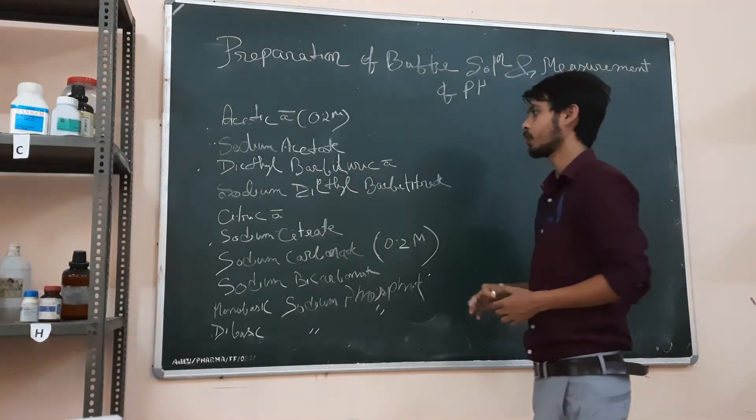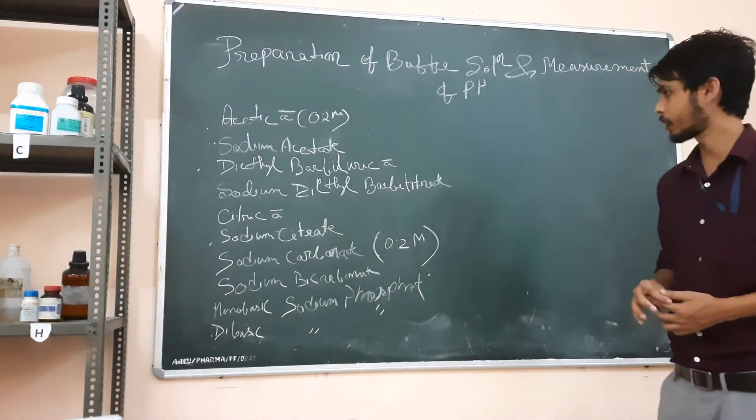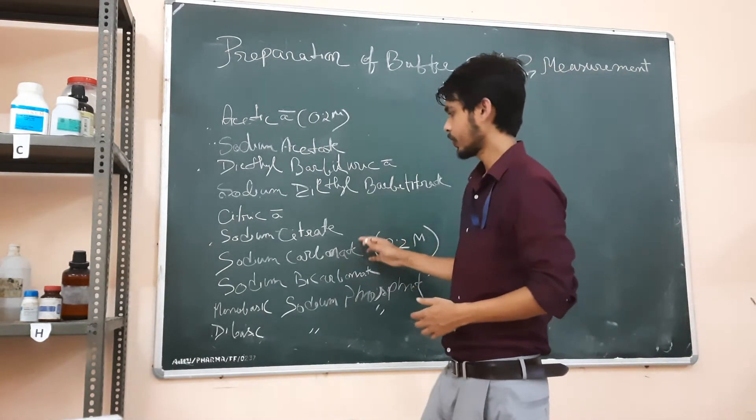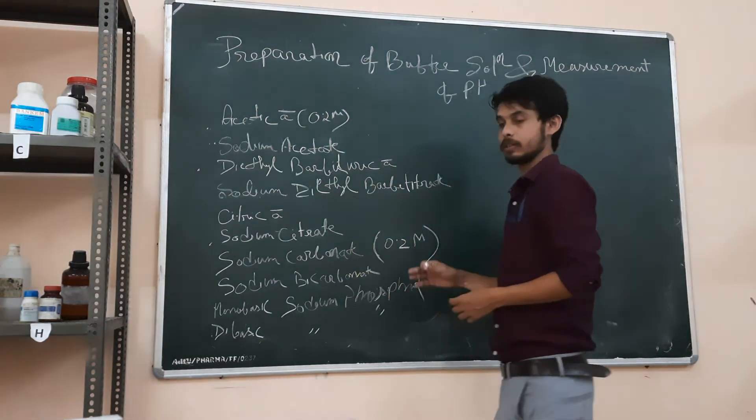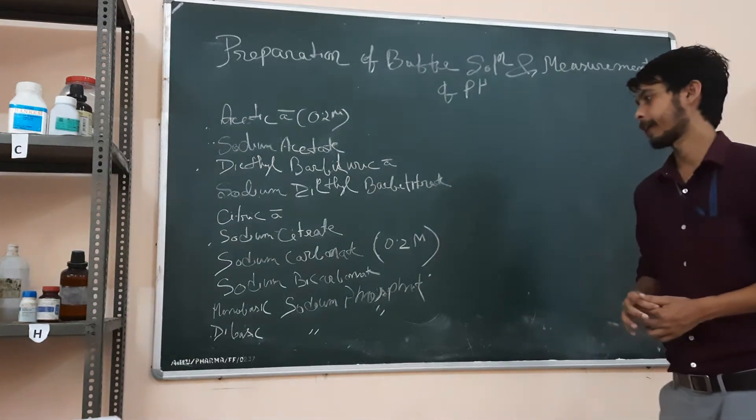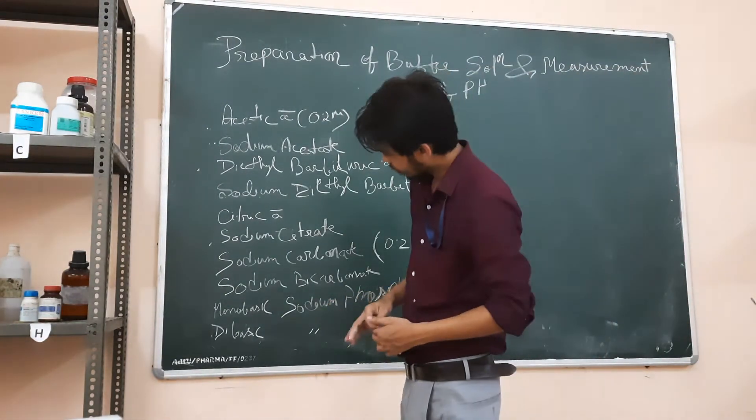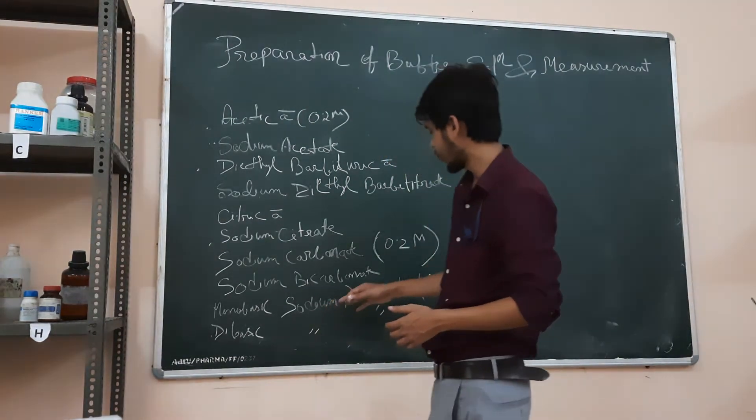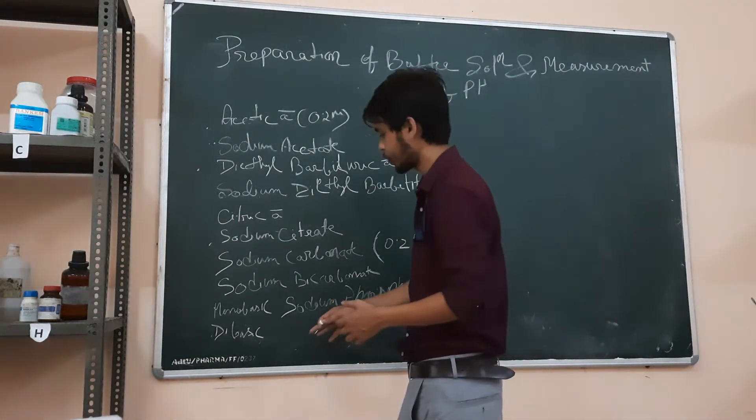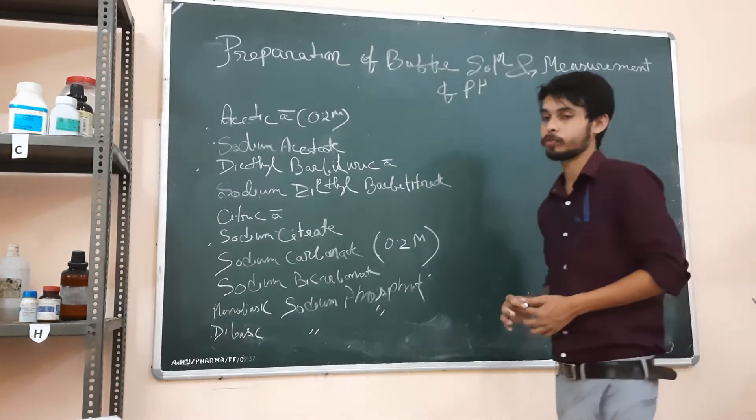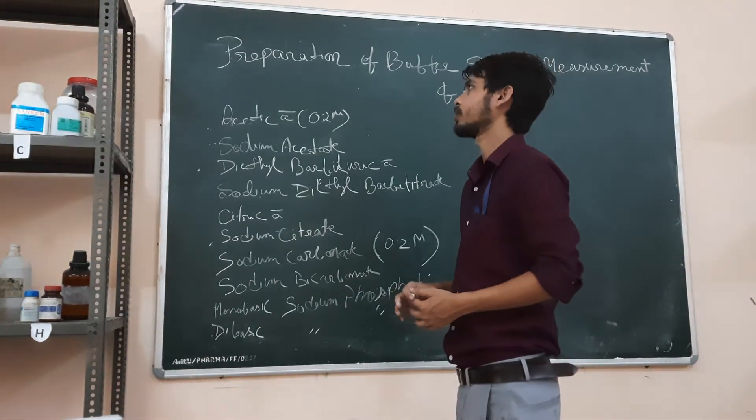sodium diethyl barbiturate, citric acid, sodium citrate, sodium carbonate 0.2 molar, sodium bicarbonate, and lastly monobasic sodium phosphate and dibasic sodium phosphate. These reagents are needed to prepare the phosphate buffer.